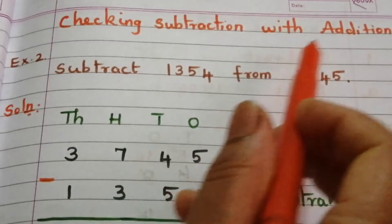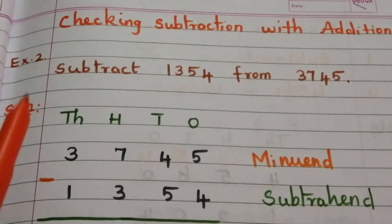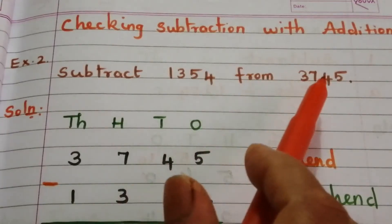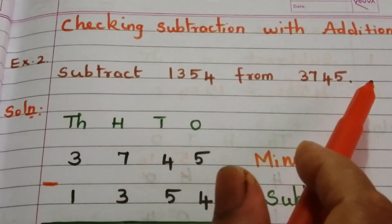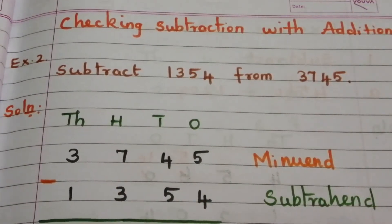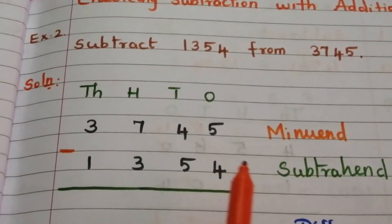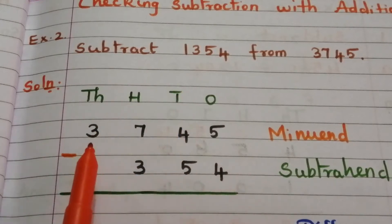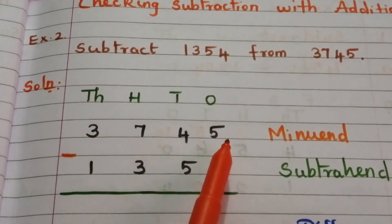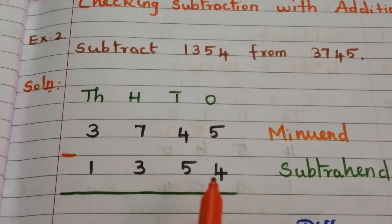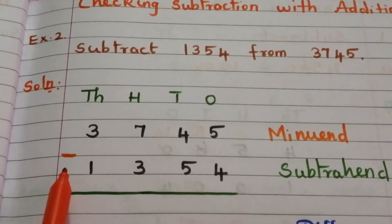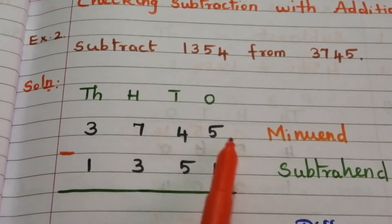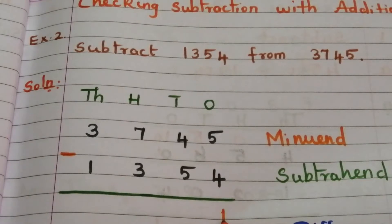Topic example: subtract 1354 from 3745. We are going to subtract these. Write thousands, hundreds, tens, ones, then write 3745 and 1354, then put the minus sign. Start from ones place: 5 minus 4 is 1.